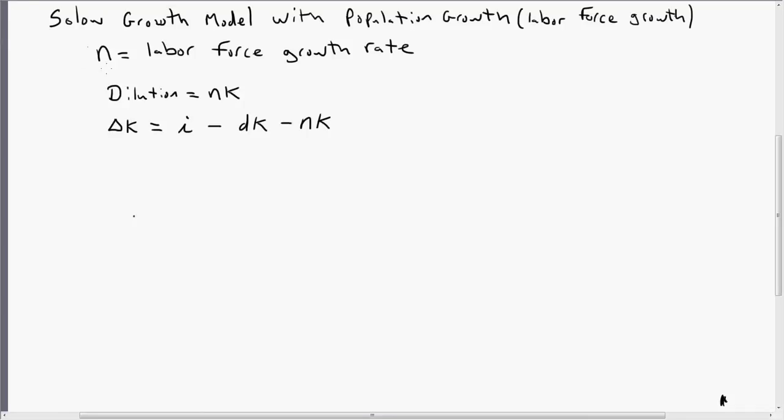So a new variable for us is going to be N, which is just going to equal the labor force growth rate. And this brings in this concept of dilution. Dilution is the idea that as the labor force grows, there's going to be less capital to go around for each worker.